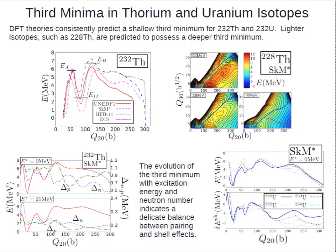Showing the whole uranium chain: uranium-232 — where experiments insist there's a third minimum — is the red curve, but as you go to lighter isotopes like uranium-228 and uranium-230, there's a pretty clear pocket. Combining the ideas from increasing excitation energy, I show both the energy curve and the pairing gaps. As you increase the excitation energy, that also quenches pairing, so the pairing effect in the nucleus is much smaller at higher excitation energies. Since low pairing seems to correspond to a deeper pocket — as does lighter neutron numbers — that indicates there's some balance between shell and pairing effects that's creating the third pocket in the first place.